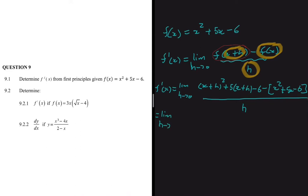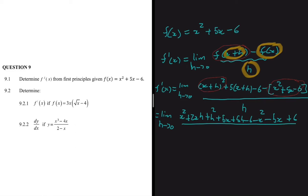Now we expand. (x + h)² gives x² + 2xh + h². Then 5(x + h) gives plus 5x + 5h, minus 6. Distributing the minus sign over the original function gives minus x² minus 5x plus 6. Then we divide everything by h.